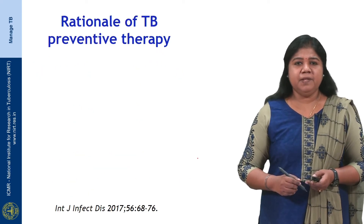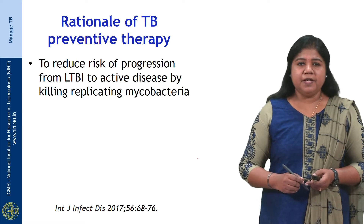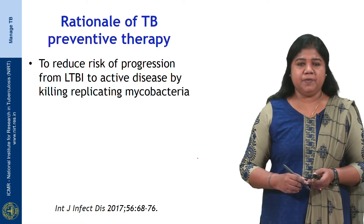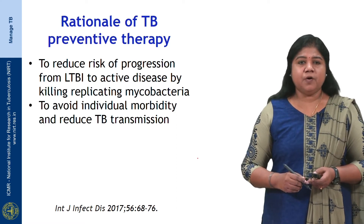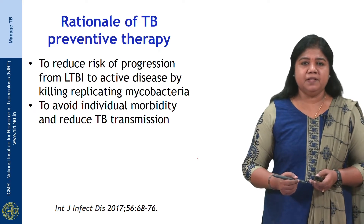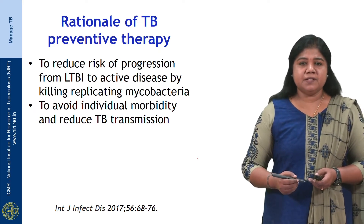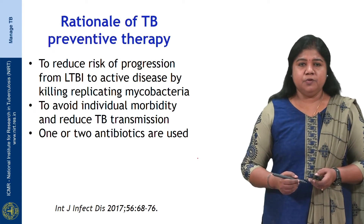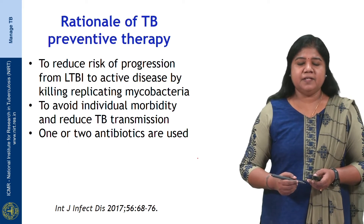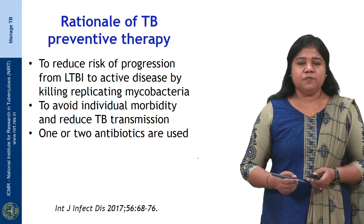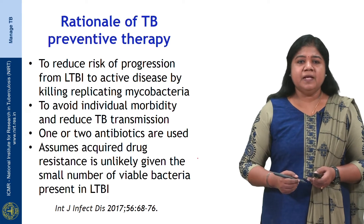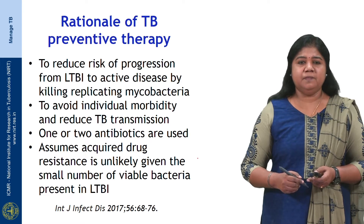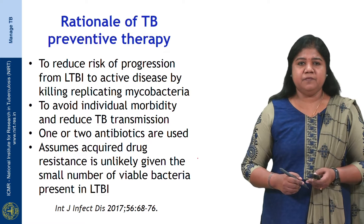What is the rationale for TB preventive therapy? It is very important to reduce the risk of progression from LTBI to active TB disease by killing the replicating mycobacteria. It is also important to avoid individual morbidity from TB disease and reduce TB transmission due to active pulmonary TB disease. One or two antibiotics are used for preventive therapy, unlike treatment in which a minimum of 4 to 5 drugs are used in the intensive phase. This assumes that acquired drug resistance is unlikely given the smaller number of viable bacteria present in latent TB infection.